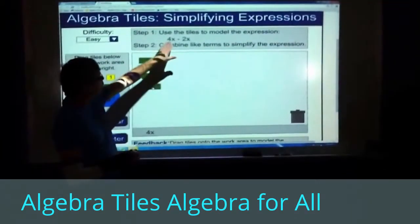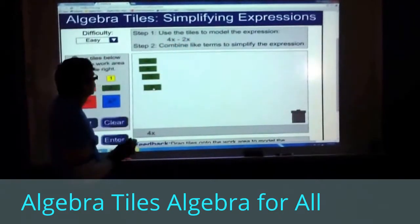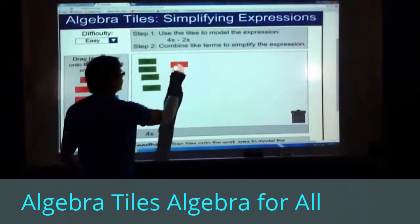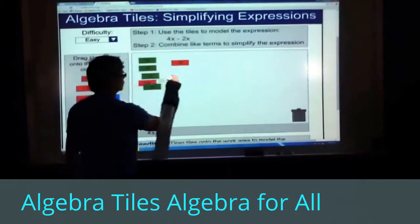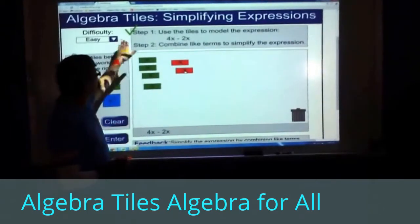We have two terms. The first term is 4x, and then the second term is negative 2x. So negative 2x means that we just put two negative x's over there. That should give us our expression.